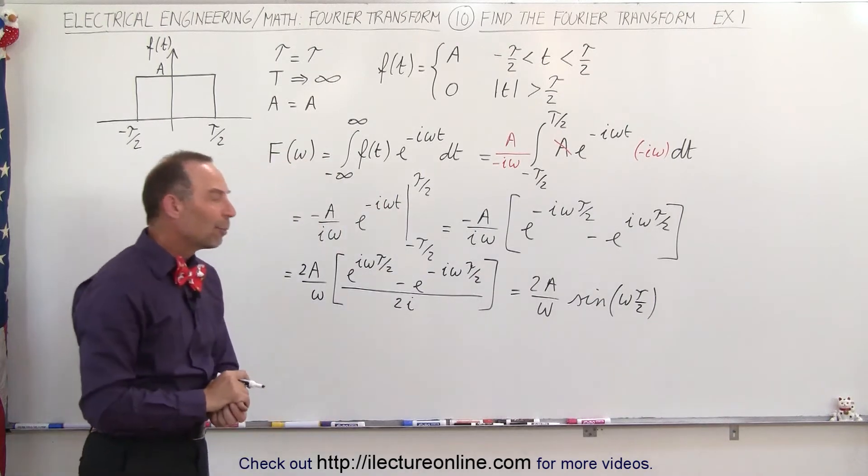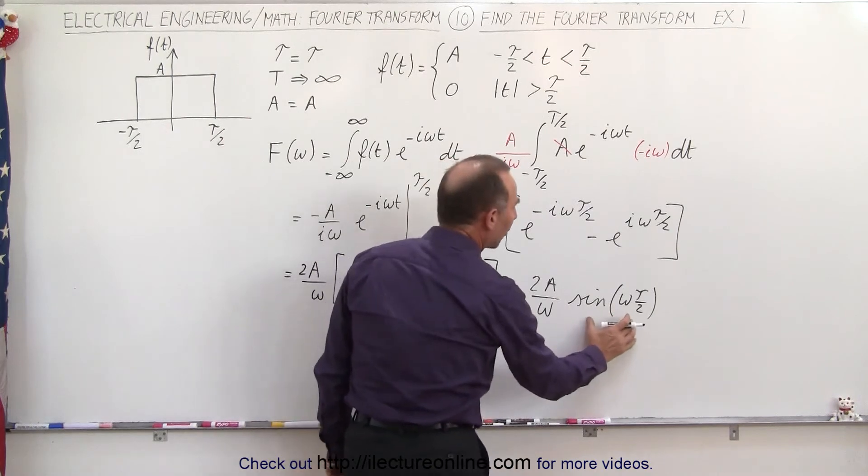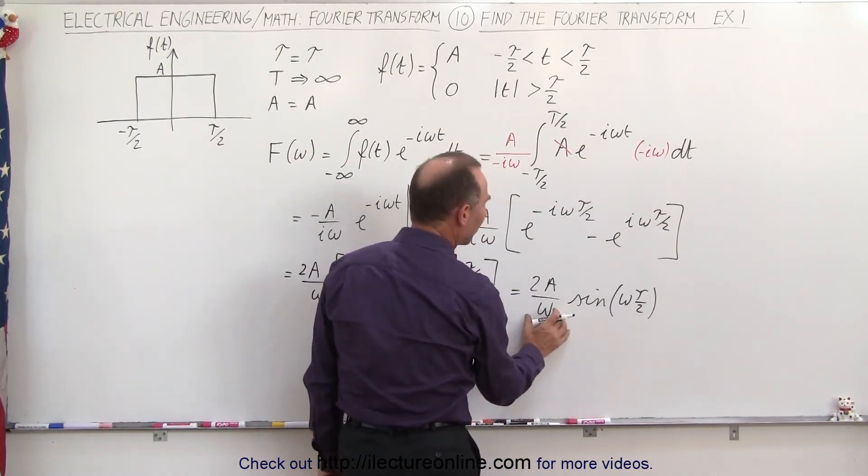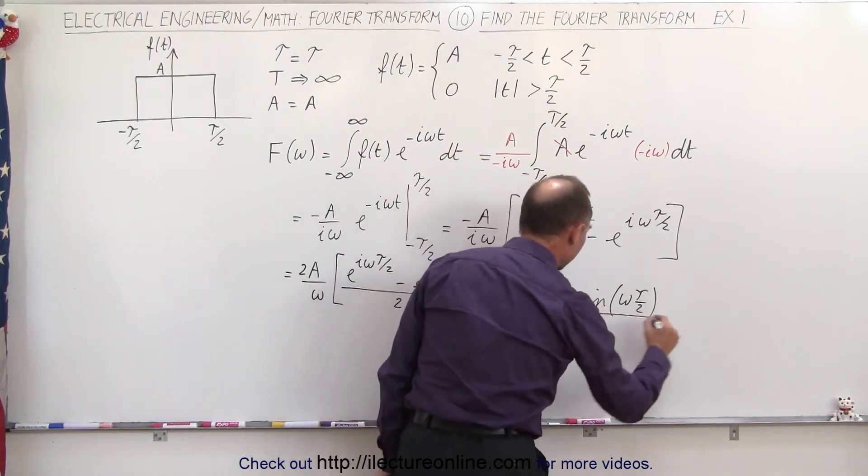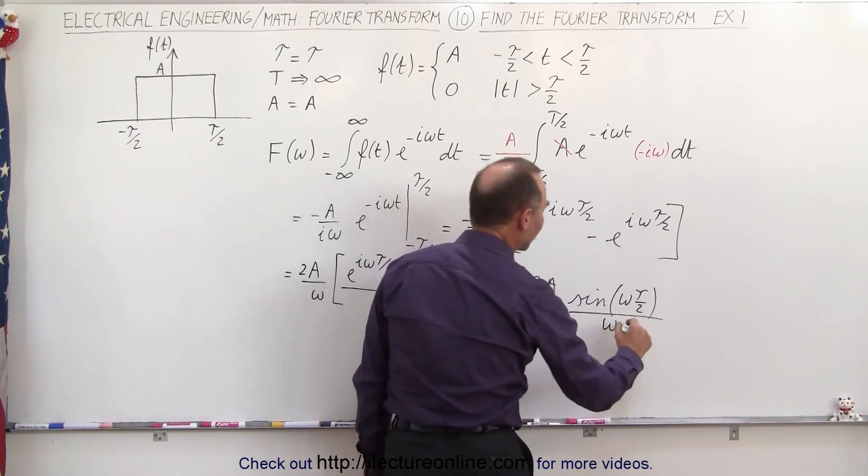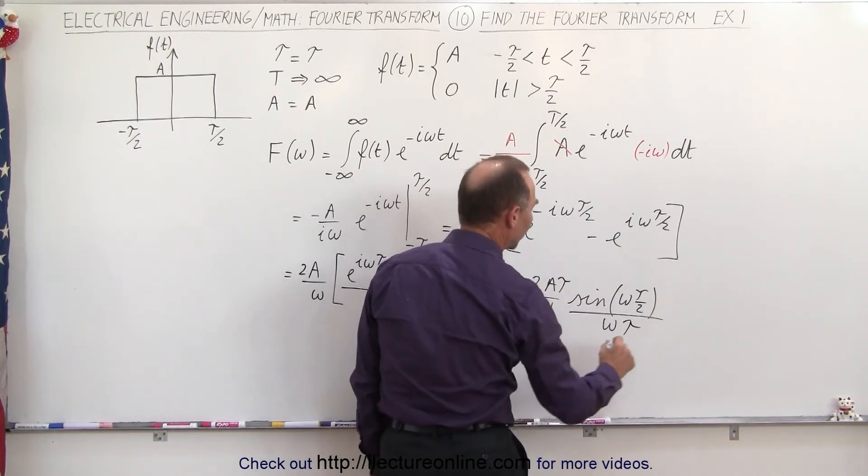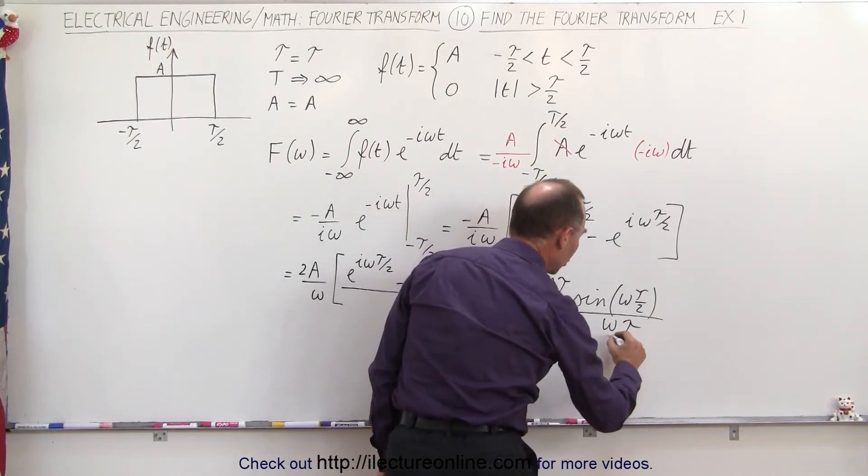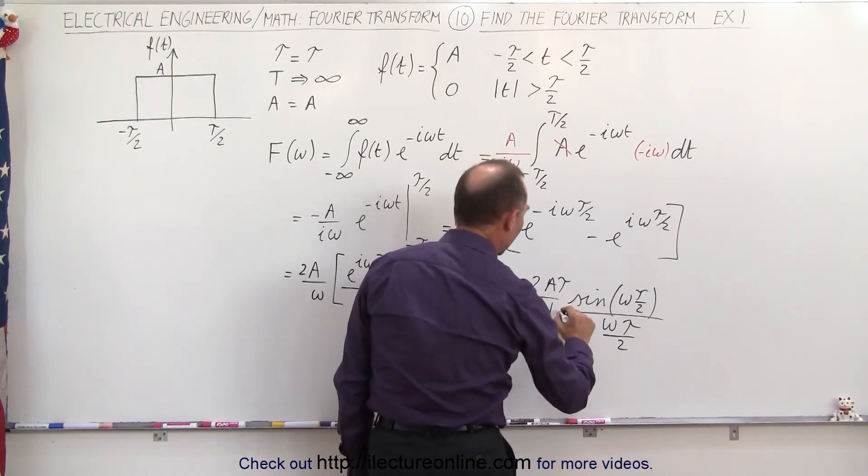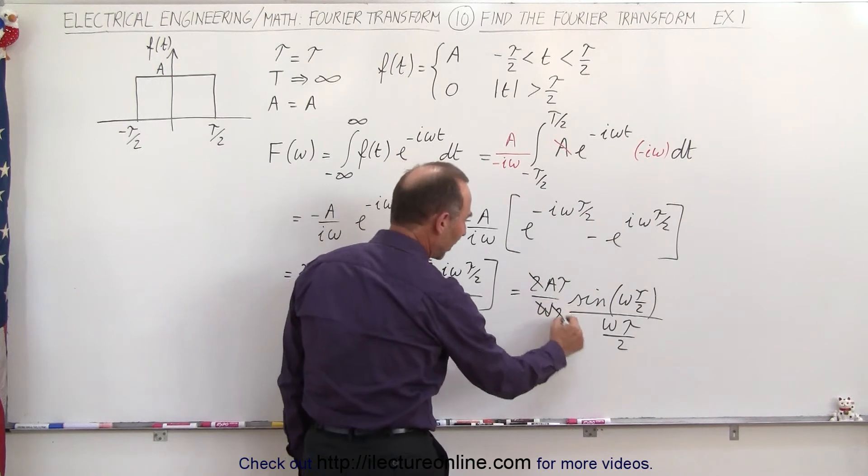And then if we want to write this as a sinc function, we need to then also divide this by omega tau over 2. Now I already have an omega, so I can put a line here, I can put the omega over here, but now I need to divide this by tau. If I divide by tau I must multiply by tau, and then divide this by 2, and of course if I do that I need to divide by 2 as well. So what happens is the 2 cancels out.